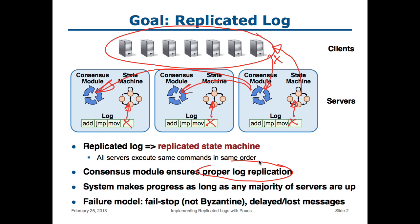You can see that as long as the logs are identical on all of the machines and the state machines process commands out of the logs in order, then they're going to behave identically. It's the job of the consensus module to make sure that the log is properly replicated, and that's what we'll use Paxos for. The most important key property of a consensus-based approach is that the system can provide all of its services as long as a bare majority of the servers are up. So if we have a cluster with five servers, it can provide all of its services as long as three servers are up — tolerating two of the five servers being down. Typically the cluster sizes will be a small odd number, such as three, five, or seven.